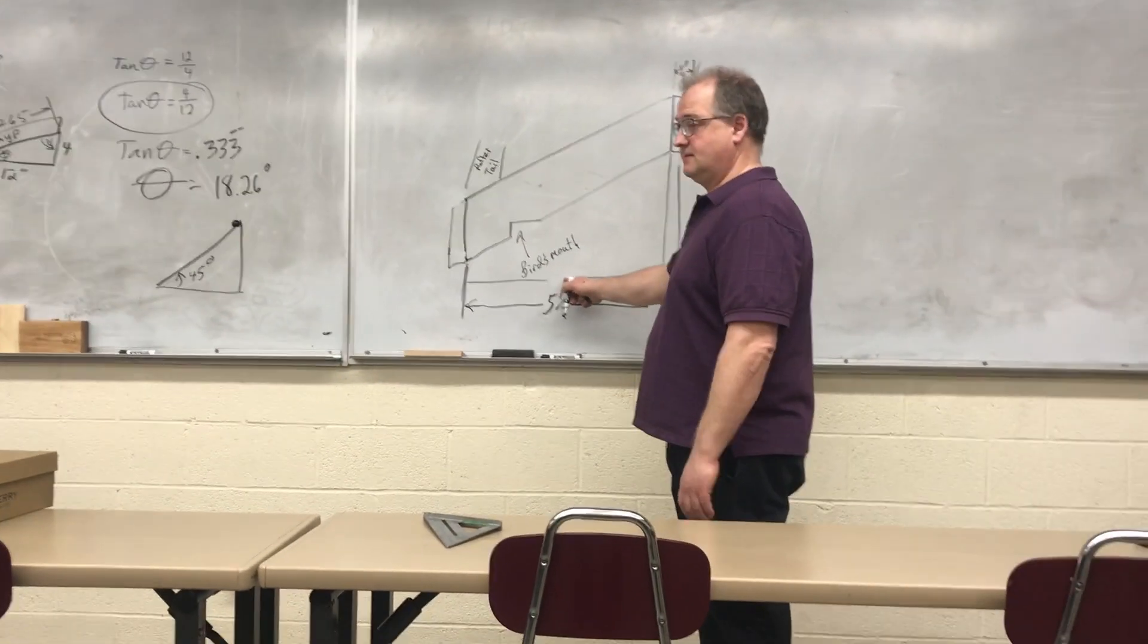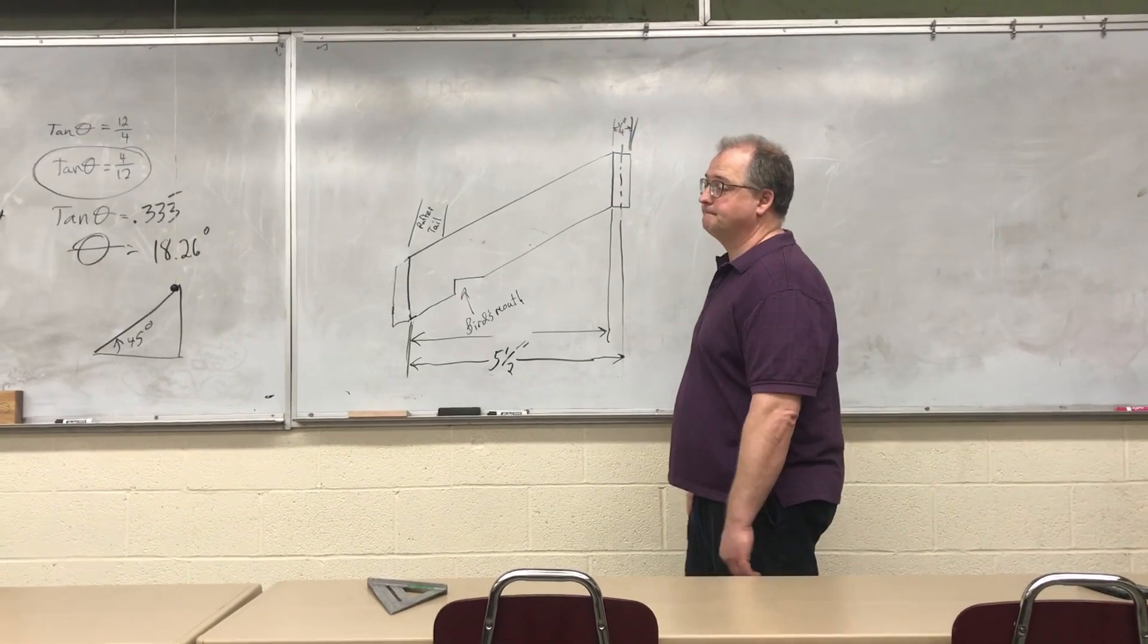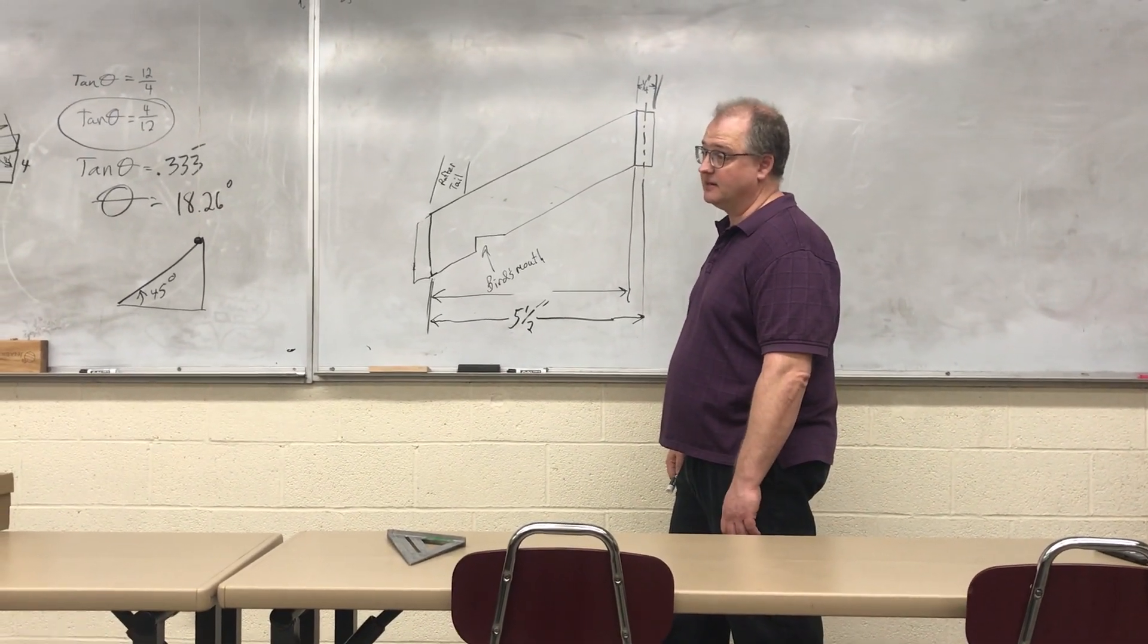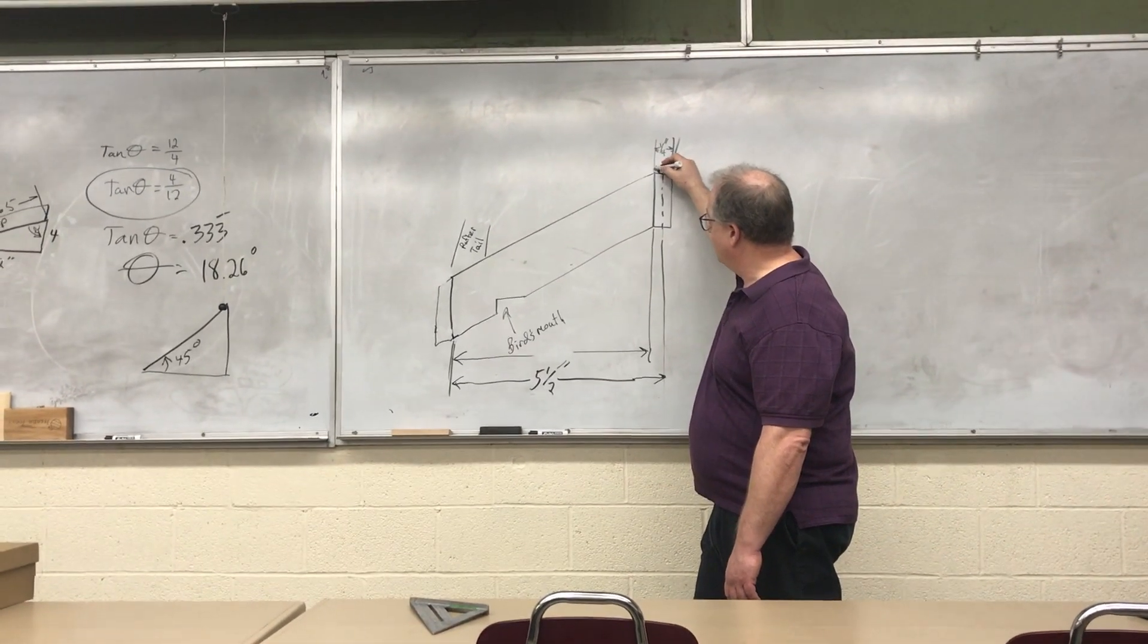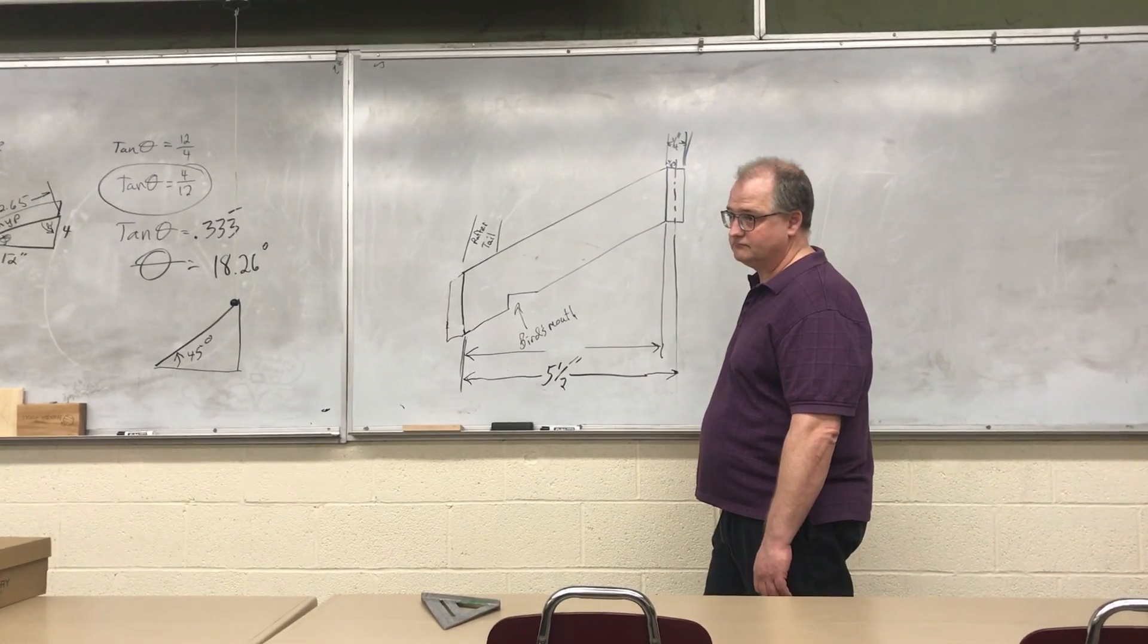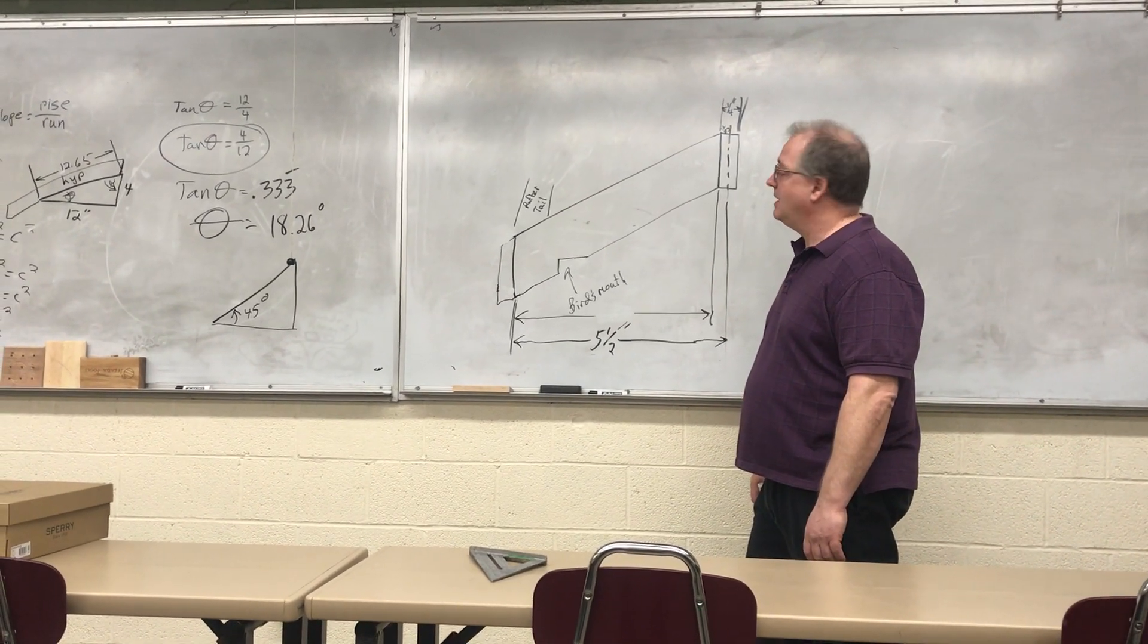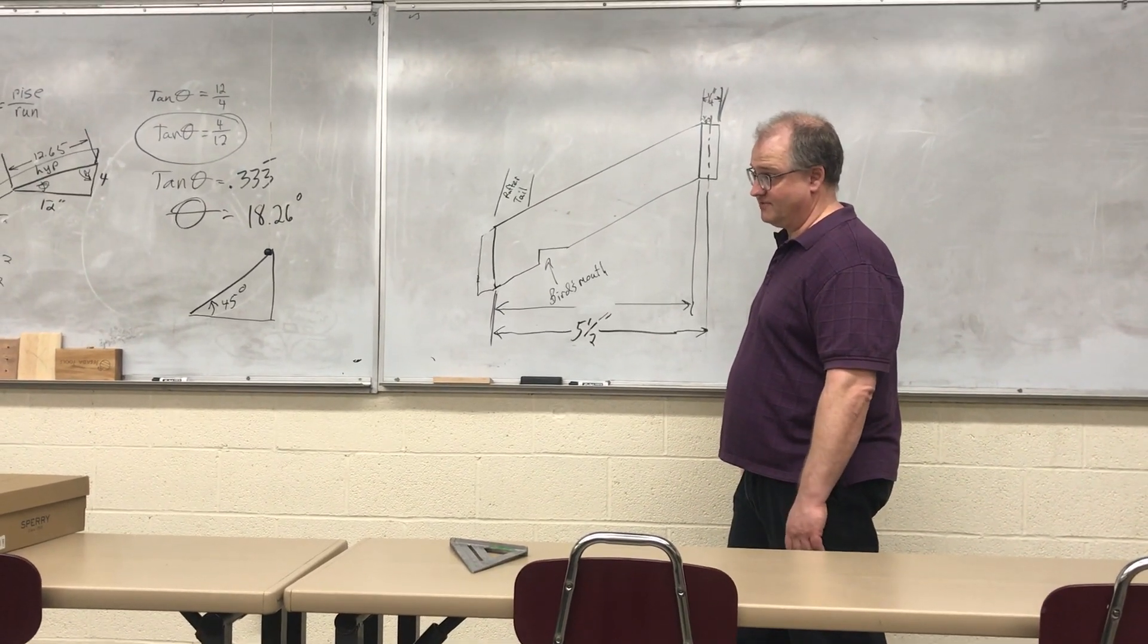So what's this distance here? 5.5 minus half of a quarter leaves us what? What's half of a quarter? Remember guys, if you need to know half of a fraction, all you've got to do is double the denominator. So this is one-eighth here. So what's five and a half minus one-eighth? If we were five and a half minus one-quarter, it would be five and one-fourth.